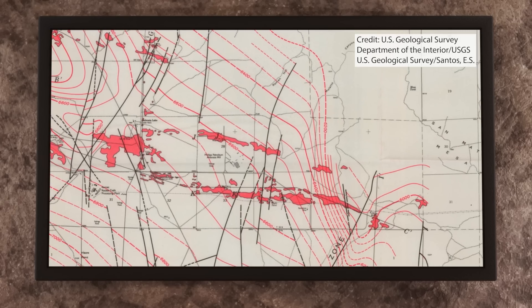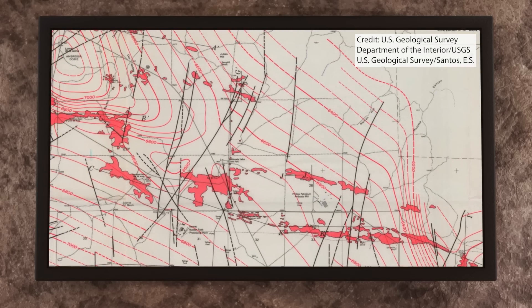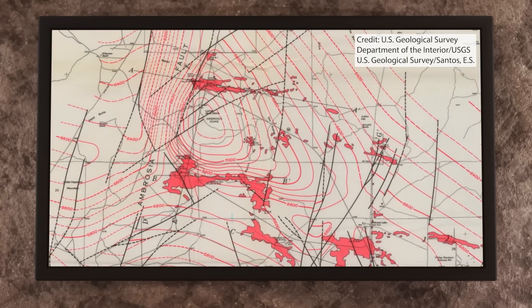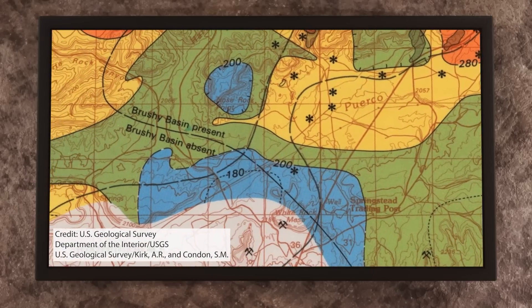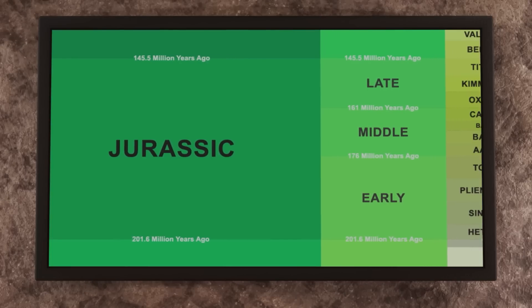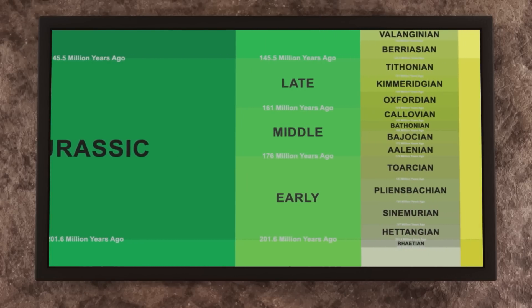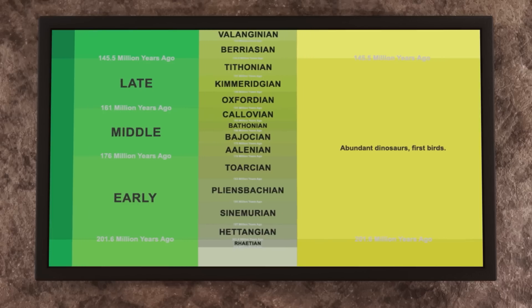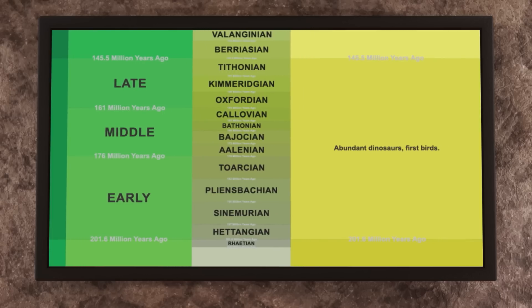First is the Tidwell member, followed by the Saltwash, and then finally by the Brushy Basin. The first thing you need to do is consult a geologic map to look for the Morrison Formation. If you break the Morrison into more specific units, look for the Brushy Basin member, which is a real juicy target. In the timeline, the Brushy Basin is roughly a 10 million year time frame between 145 million to 155 million years ago, according to geologists.